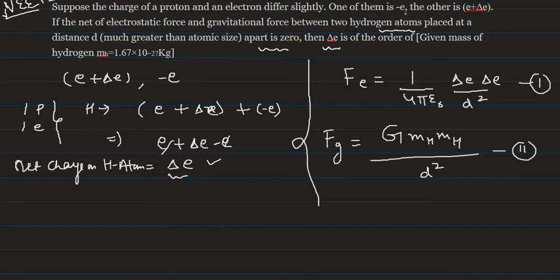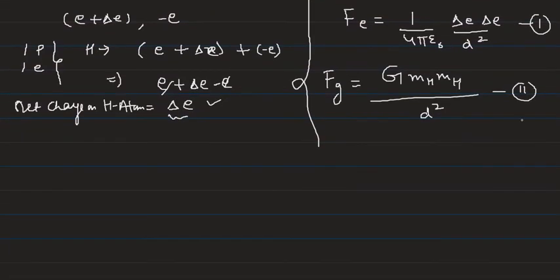And in this question, we have seen that if net electrostatic force and gravitational force between two hydrogen atoms is zero, we will equate both the forces with each other. These forces are equal in magnitude and their net sum is equal to zero.